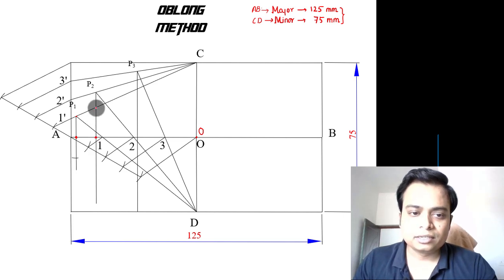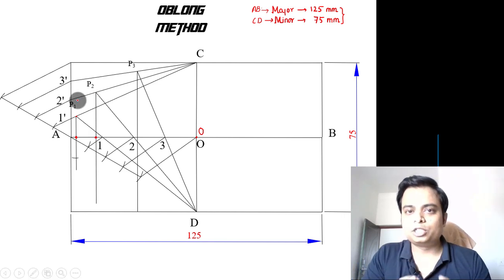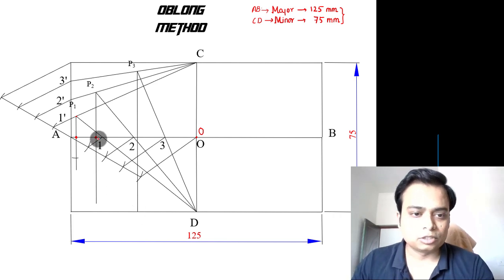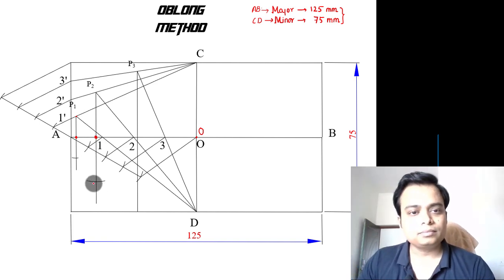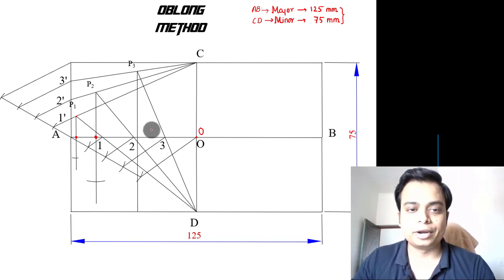In the same manner, keep one leg of your compass here, other leg over here, and with that much amount as the radii, and with this point as the center, cut an arc. That's going to give you the reflection of point P2. In the same manner you can obtain a point for this P3 over here. Half the ellipse is done; the remaining half is yet to be prepared.